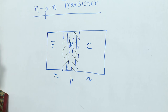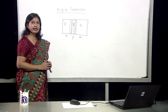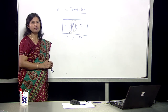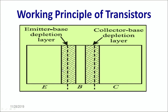In the PN junction diode there was just one depletion region, while in the case of a transistor there are going to be two depletion regions because of two junctions formed. Since the doping of the emitter region is highest, the thickness of the depletion region towards the emitter side is least. Since the doping of the base region is least, the thickness of the depletion region is larger in the base region. Towards the collector side, the doping is higher than the base region and therefore the thickness of the depletion region is lesser towards the collector side.